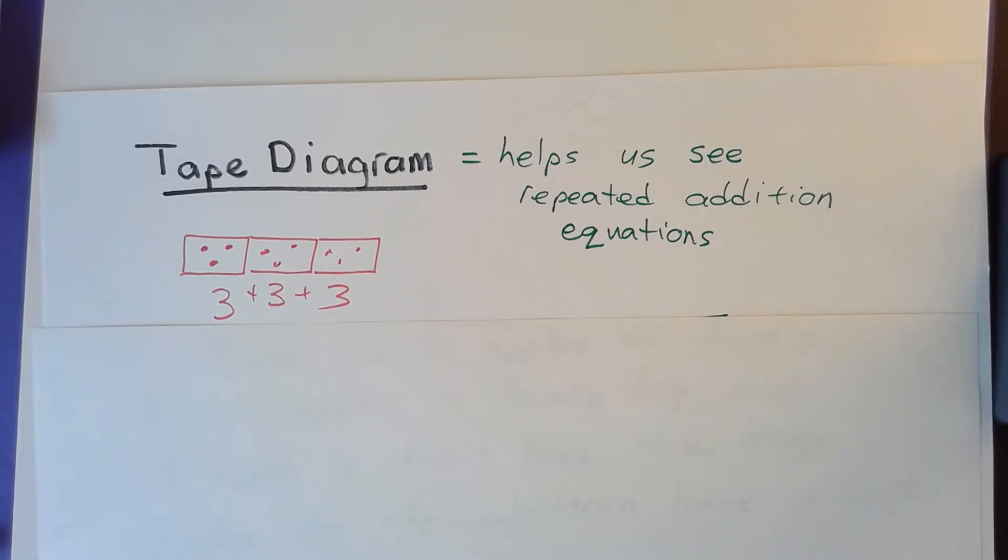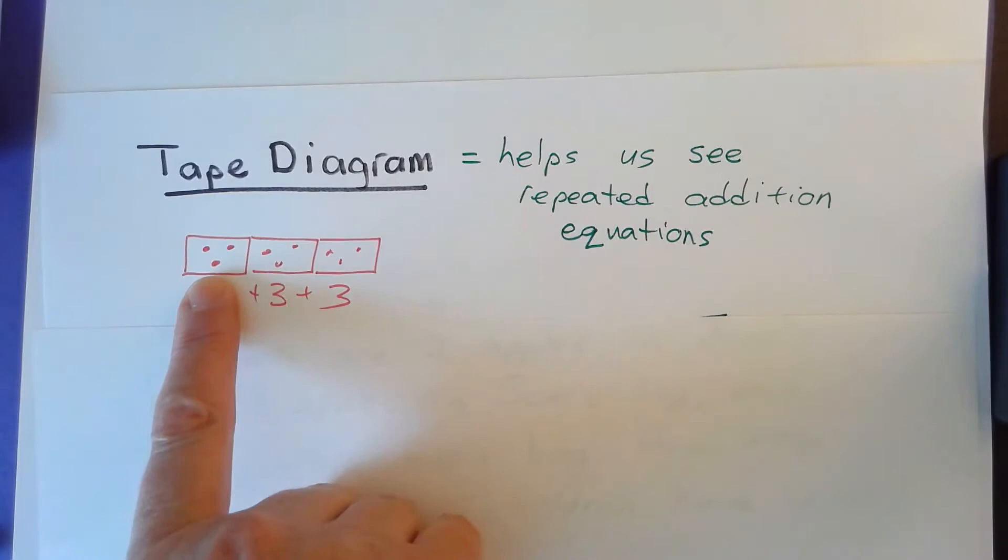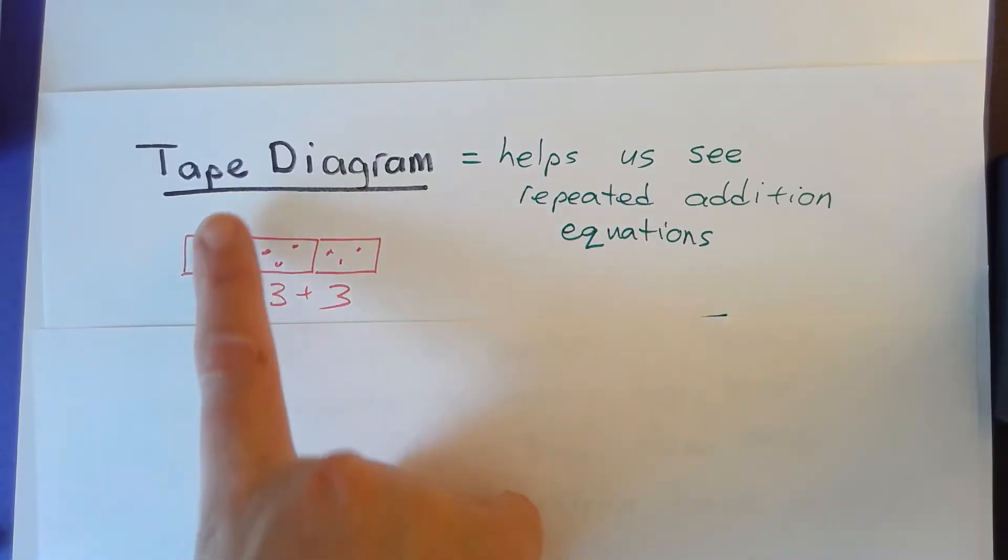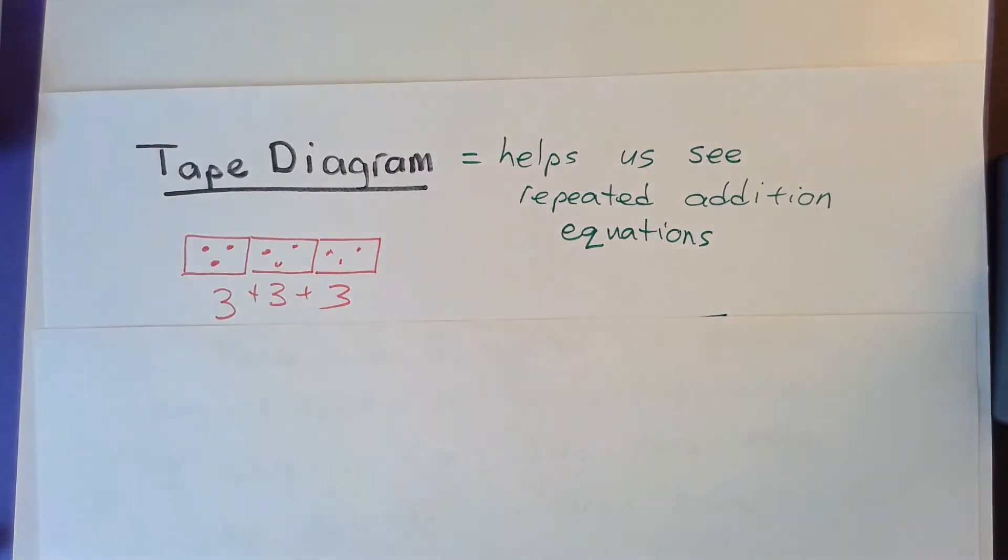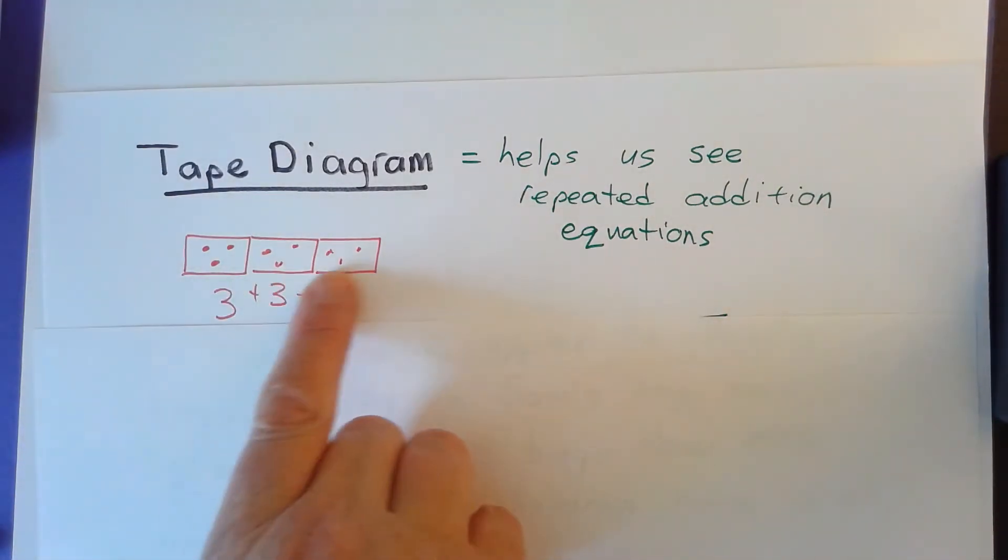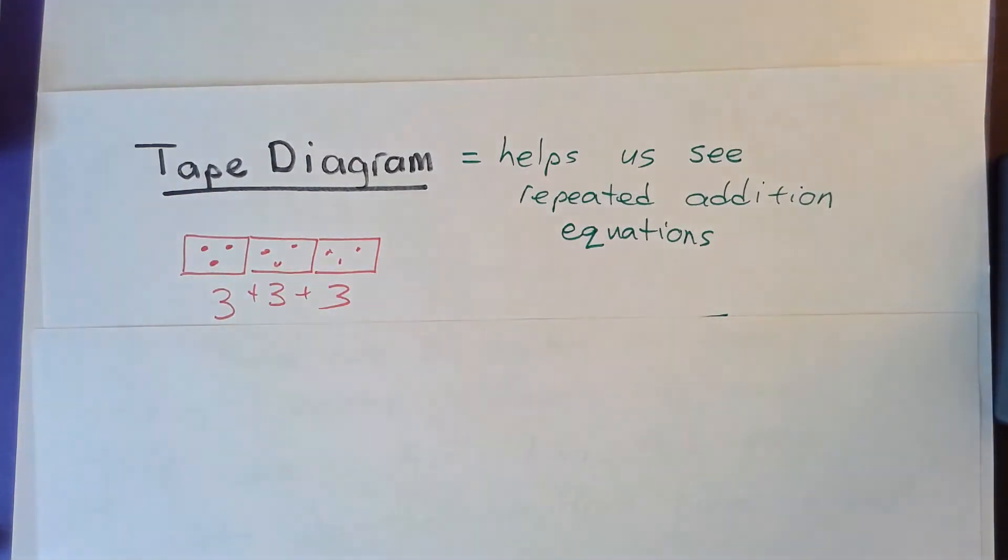Hi friends, we're going to learn about tape diagrams. A tape diagram is basically a tool we use to help us see repeated addition equations better. So it's going to look something like this. It looks like boxes and they call it tape because it kind of looks like a piece of tape and it's a diagram.